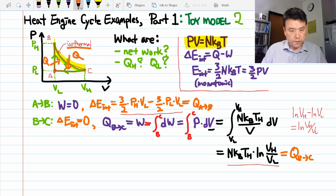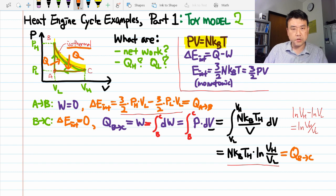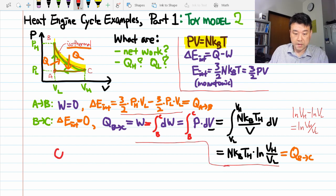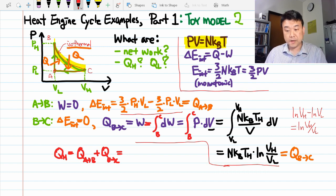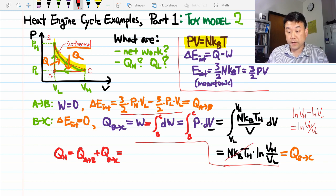So, this is a good point to pause for a bit and calculate the heat input to the system. So, heat input is equal to heat input in process A to B plus heat input process B to C. And it doesn't really simplify here, so I'll just write it down. I can do one simplification.